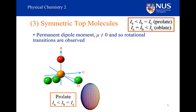The reason why we call it prolate is because if you were to map the rotational constant in space, as we've done here, then it would have this kind of rugby ball shape. I'm going to let you think about that and see whether that makes sense.